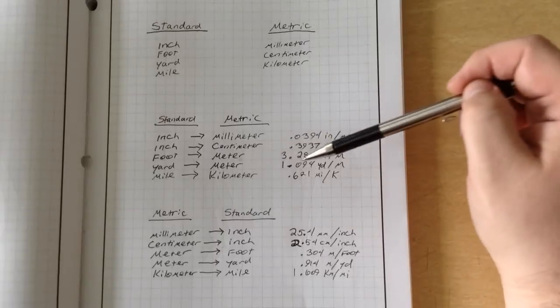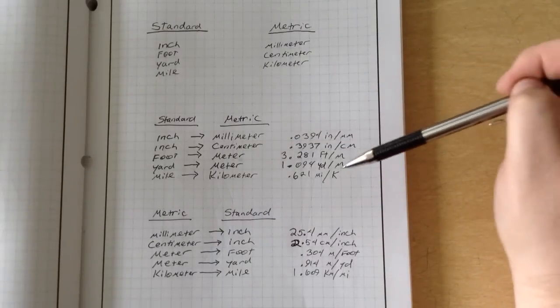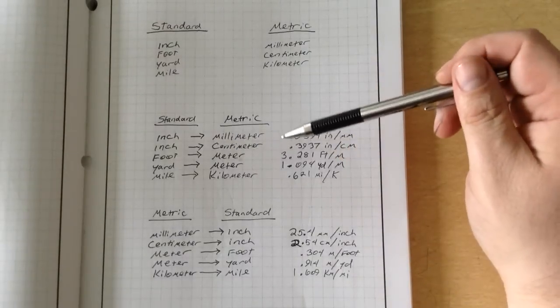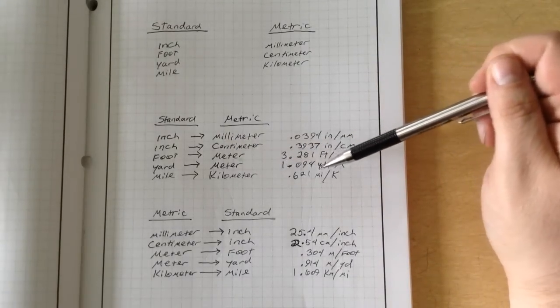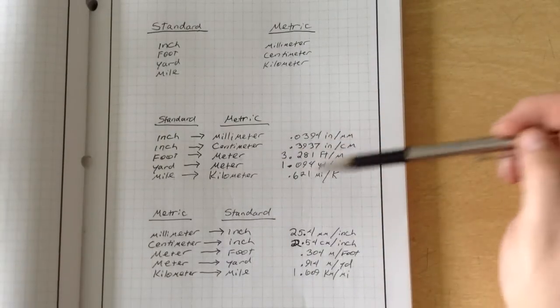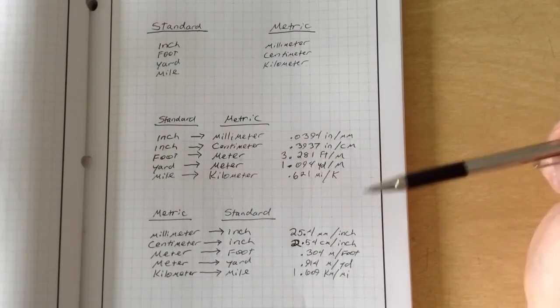If you're going foot to meter, 3.281 feet per meter. Yard to meter, 1.094 yards per meter. Mile to kilometer, 0.621 miles per kilometer.